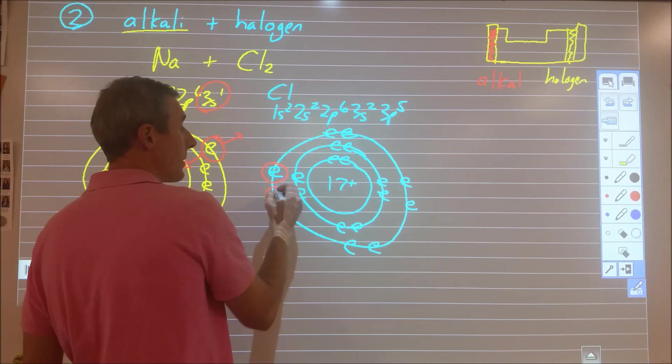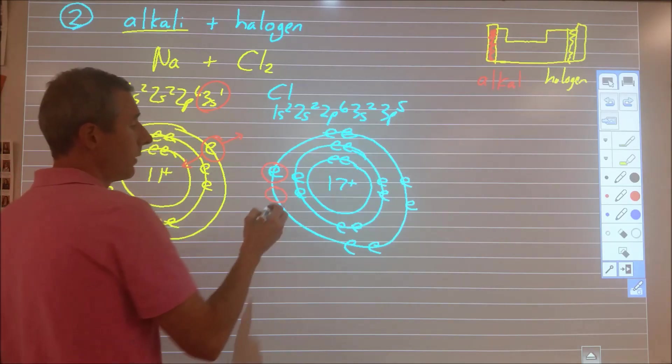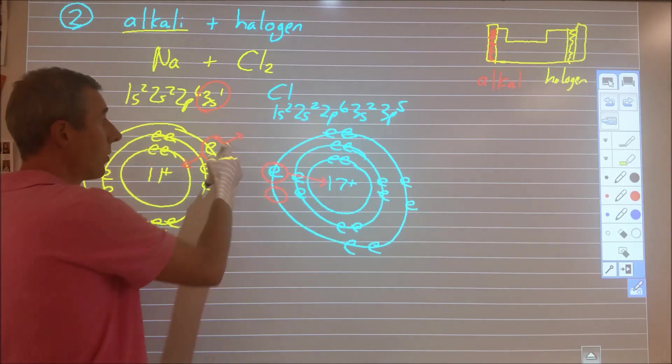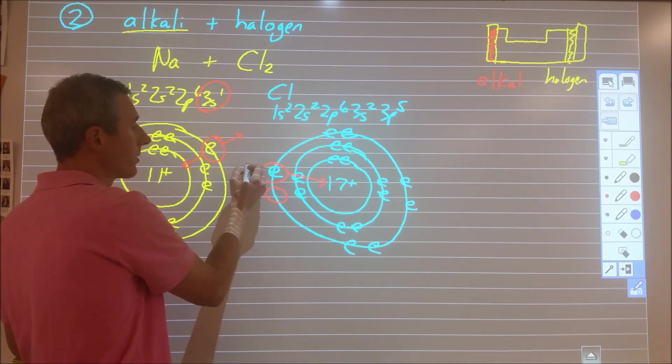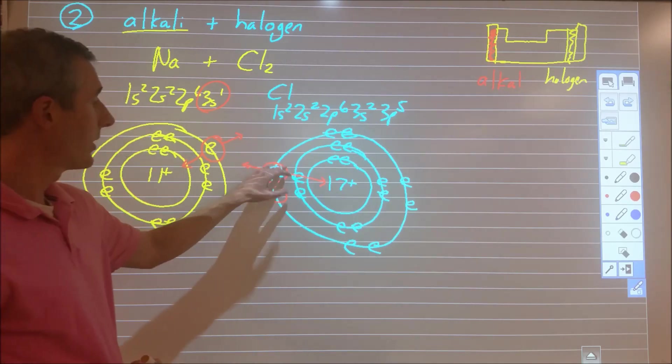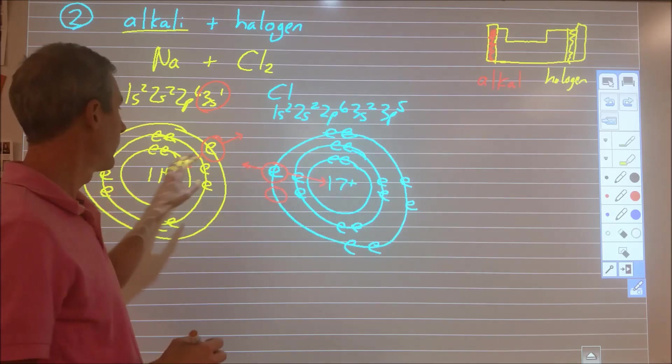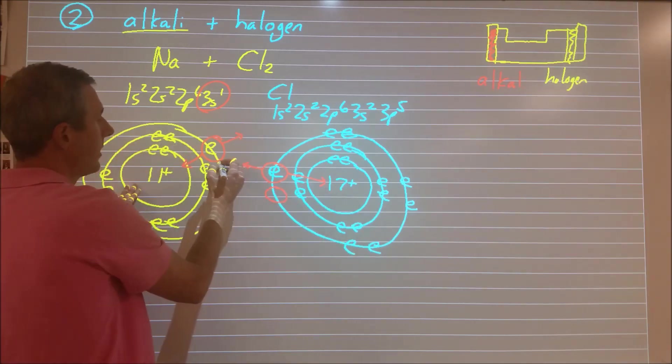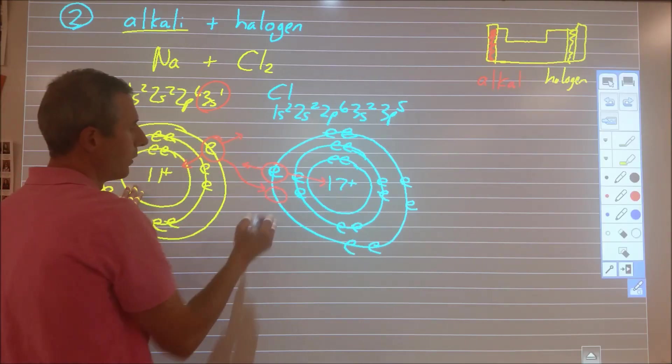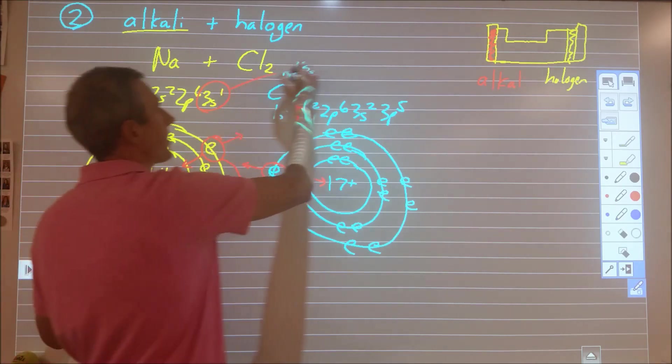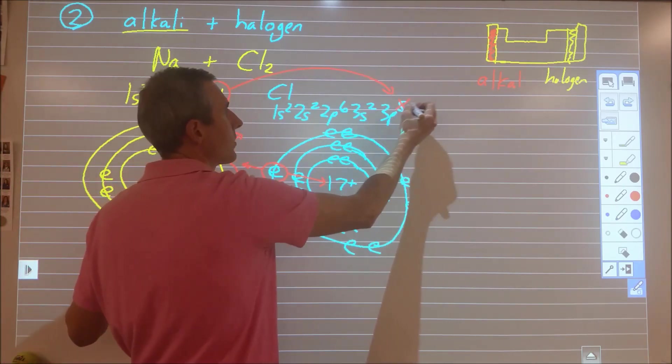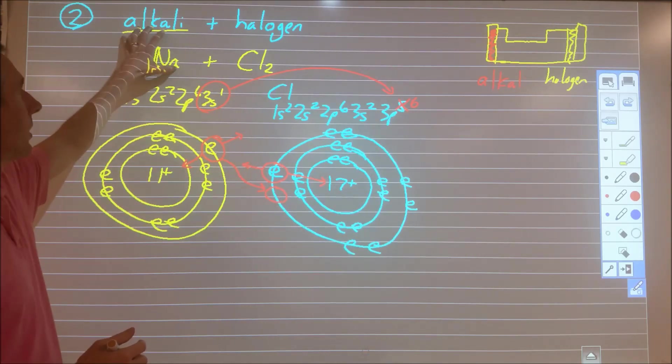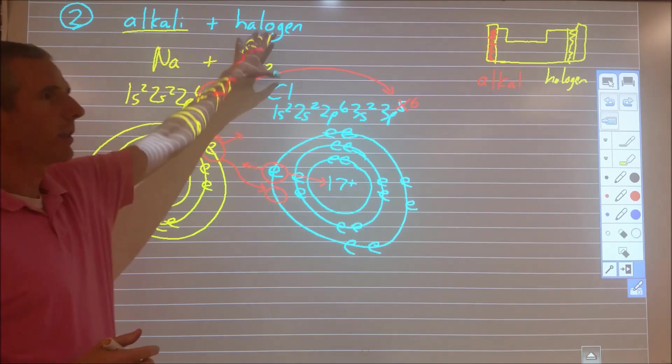So what that means to us is that chlorine is much better at pulling on its electron here, the valence, than sodium is. Which also means that since we have the capacity for another electron, and when these two collide, this is going to move over to here. So we're going to end up with a 3s electron moving over here, changing this from 3p5 to 3p6. So we essentially are mixing things that are really good at losing electrons with things that are really good at taking electrons.